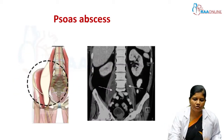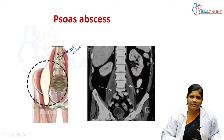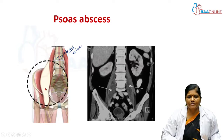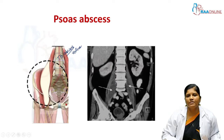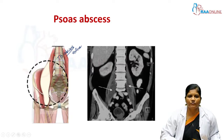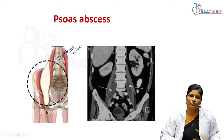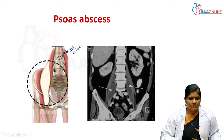In psoas abscess, a TB abscess in the vertebra may pass through the psoas muscle and reach the femoral triangle. The psoas muscle is covered by psoas fascia, and within this fascia the abscess can extend downward to the femoral triangle due to the attachment of the muscle, or extend into the thorax through a gap in the medial arcuate ligament.